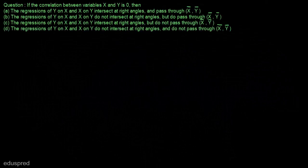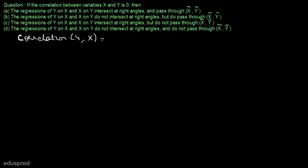In this video I am going to solve this question. If the correlation between variables x and y is zero, then we have to find which of the following statements is correct. We are given that the correlation between y and x is equal to zero, and we have to talk about two regressions: the regression of y on x and x on y.